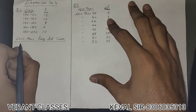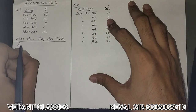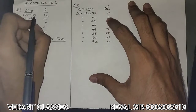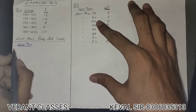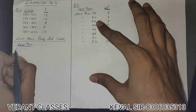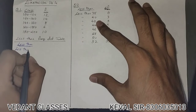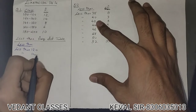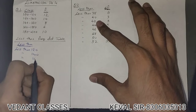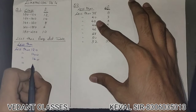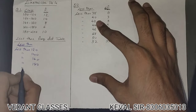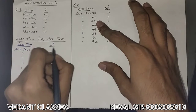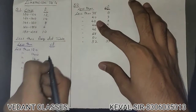Let's make a less-than frequency distribution table. For the less-than type, we consider the upper limit. So it will be: less than 120, less than 140, less than 160, less than 180, and less than 200.